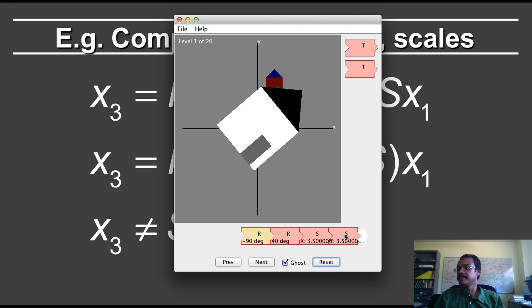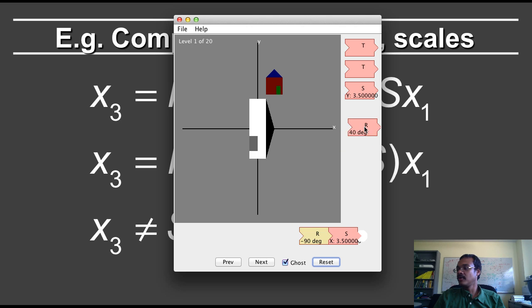What I'm going to do to make this simpler is put back one of the scale and one of the rotation transformations. So let me put this back. You have a scale of 3.5 units in the x direction, you have a rotation of 40 degrees. And this is how the house looks like.